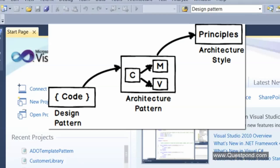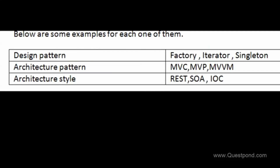So next time you say 'this is a design pattern,' I expect some code. Next time you say 'this is an architecture pattern,' I expect a higher-level block diagram. Examples: design patterns are your Gang of Four patterns like factory and singleton; architecture patterns are MVC, MVVM, MVP; architecture style examples are REST, SOA, and IoC — they are just principles, just one-liners.